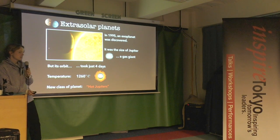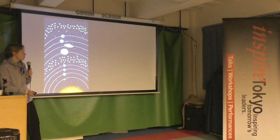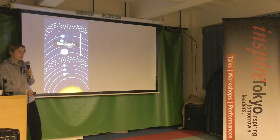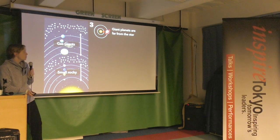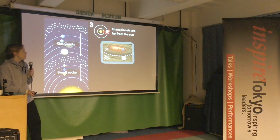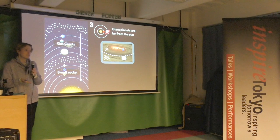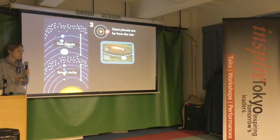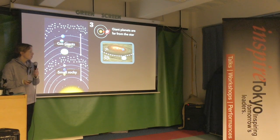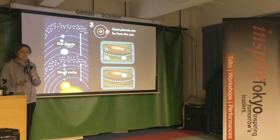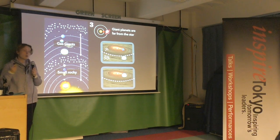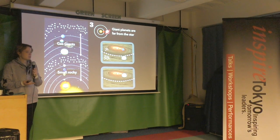Here we have a gas giant, but one very close to the star. In our solar system, gas giants should be far out and rocky planets close in — because of rule three: gas giants form far from the star where there's lots more building material. There isn't supposed to be enough building material to build a planet close to the star; it's too hot and there's no ice. So how do we get a huge planet so close to the star where there should barely be any building material?